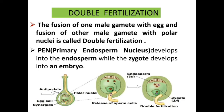In the next class we will learn about post-fertilization events — what happens to the zygote and to the primary endosperm nucleus. The aim of flowering plants in sexual reproduction is to form a seed, and we are now approaching the formation of that seed. This is how double fertilization occurs in flowering plants. Thank you and have a good day.